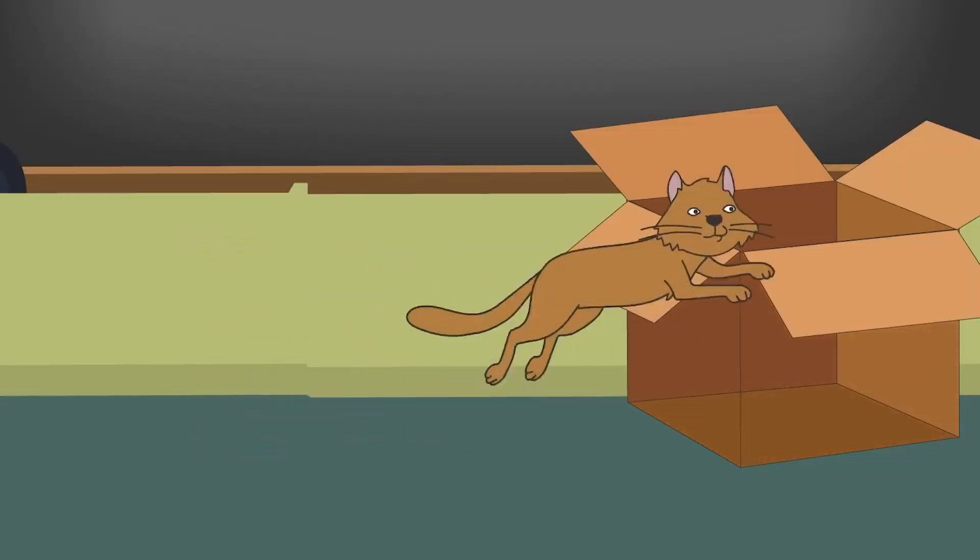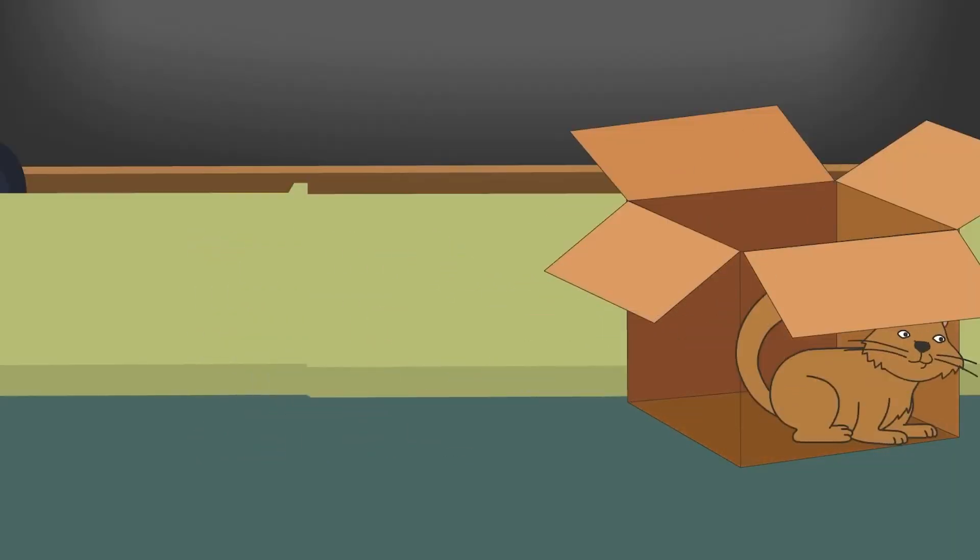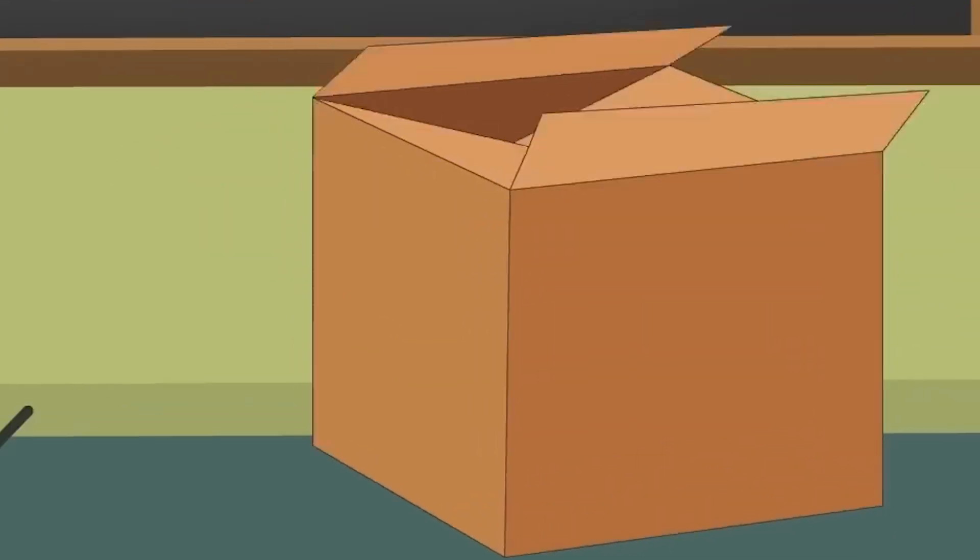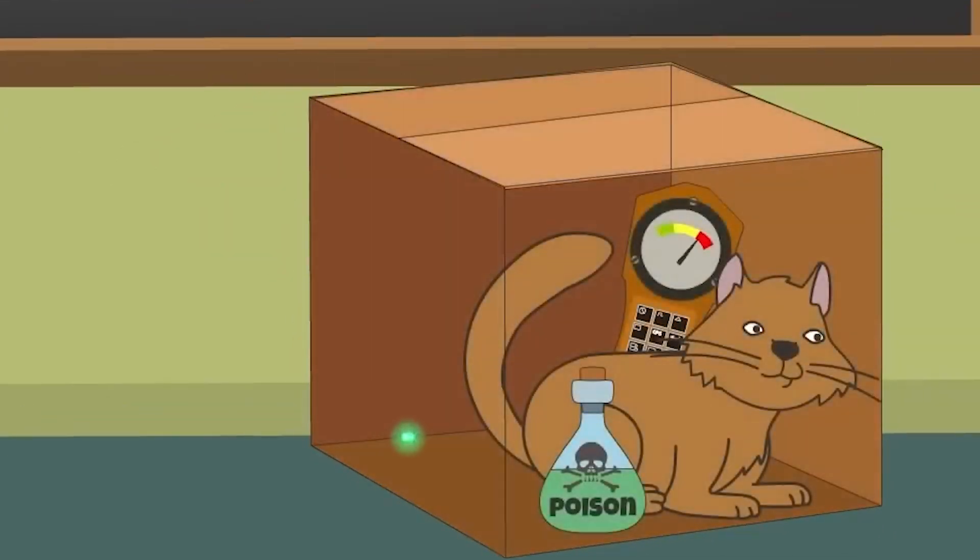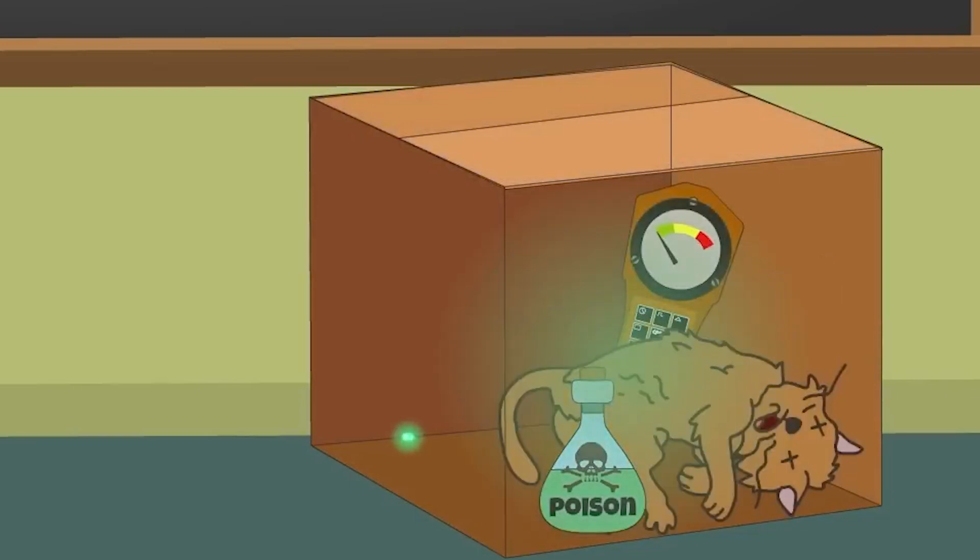You might have heard of Schrödinger's cat. As per this experiment, you put a cat in a soundproof box with a small radioactive material, a poison, and a Geiger counter. If the radioactive substance decays, then the Geiger counter triggers a setup that releases the poison, thus killing the cat. However, the decay of the radioactive substance is a random process.